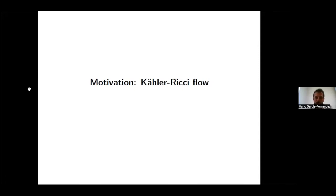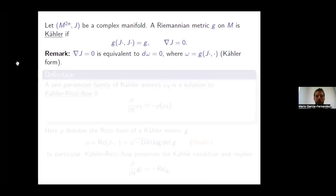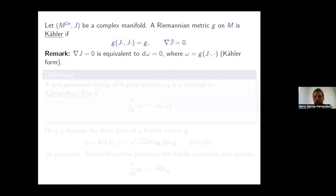We have a complex manifold of complex dimension n. In this complex manifold, I say I have a Kähler metric if I have a Riemannian metric g such that J, the almost complex structure, needs to be orthogonal — meaning the metric is Hermitian — and furthermore the almost complex structure needs to be parallel with respect to the Levi-Civita connection.